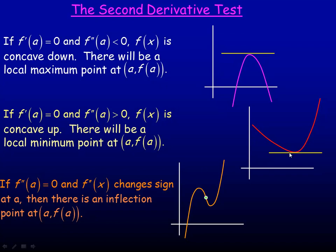If the first derivative is equal to zero at a particular point and the second derivative is positive — so the tangent lines are below the curve and the first derivative is getting larger — the graph is concave up. So if you have a place where the graph is concave up and the first derivative equals zero at some point, then there's a local minimum point at that point. The x-coordinate would be a, so we call that the point a comma f of a.